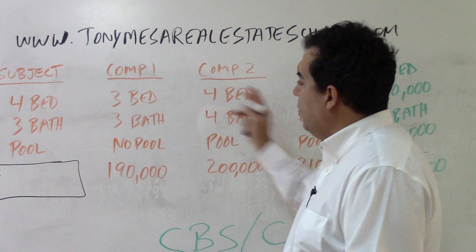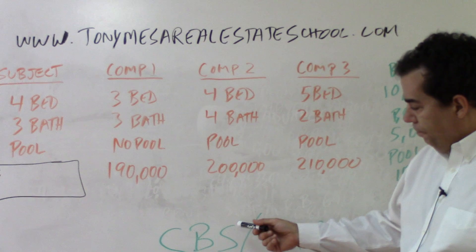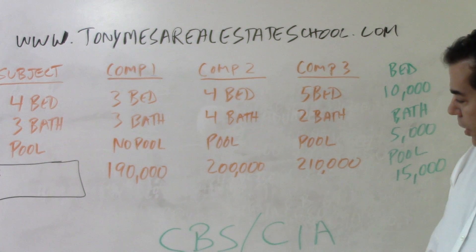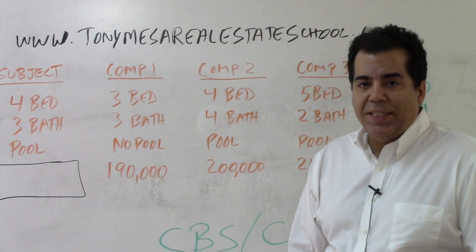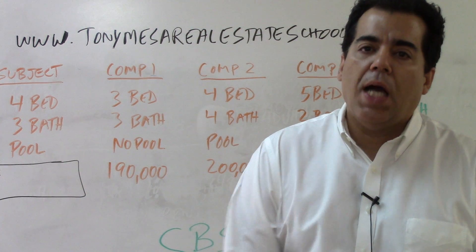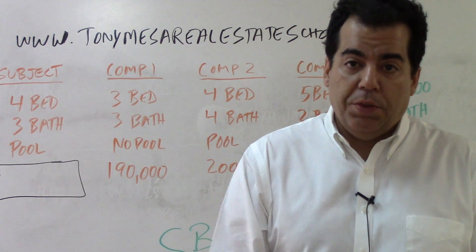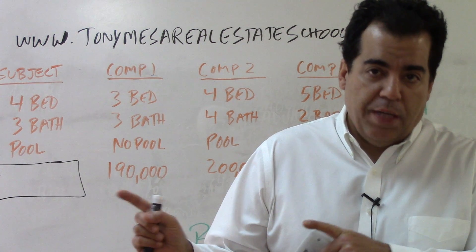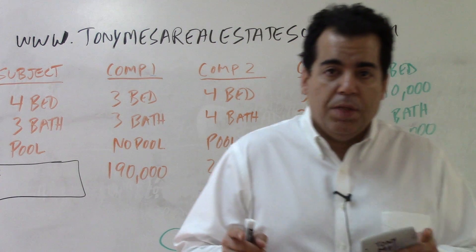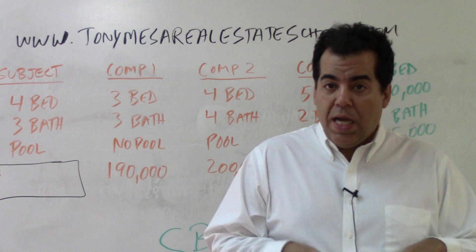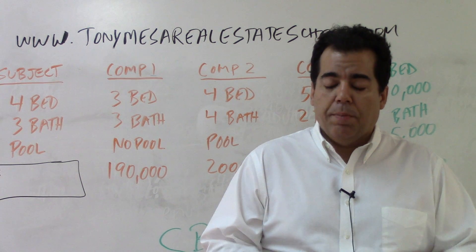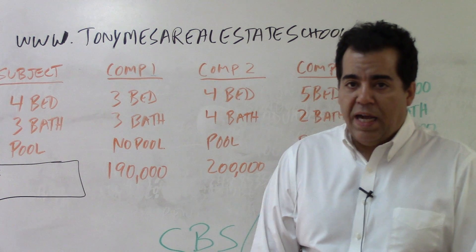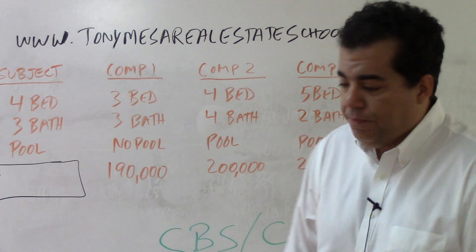The memory aid for making adjustments is CBS and CIA. CBS means if the comp is better, we subtract from the comp. CIA means if the comp is inferior, we add to the comp. We're comparing each comparable sale to the subject — if the comparable is better we subtract, if it's inferior we add. We are never adding or subtracting from the subject itself.